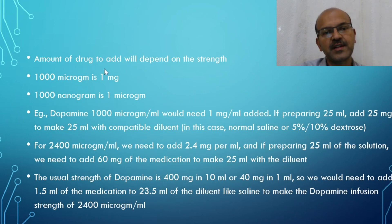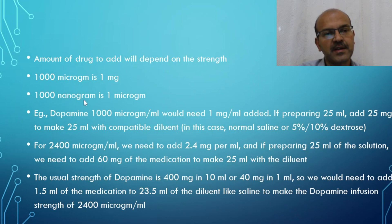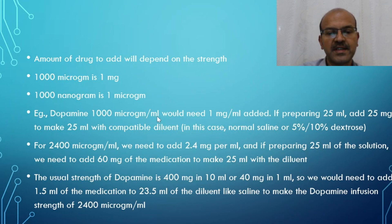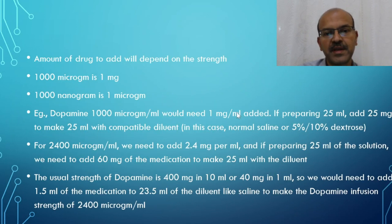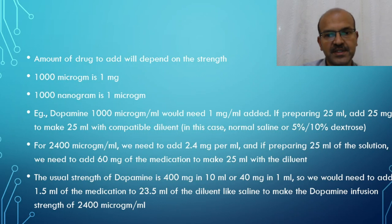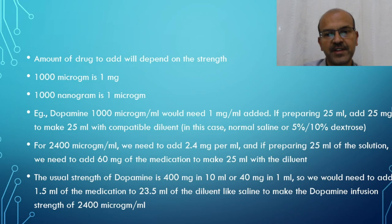The amount of drug to add depends on the strength. Remember: 1000 micrograms is 1 milligram, and 1000 nanograms is 1 microgram. For dopamine at 1000 micrograms per mL, you need 1 milligram of drug for each mL of solution. You choose the diluent — usually normal saline or 5% or 10% dextrose. To prepare 25 mL, you add 25 milligrams of dopamine to make a total volume of 25 mL.